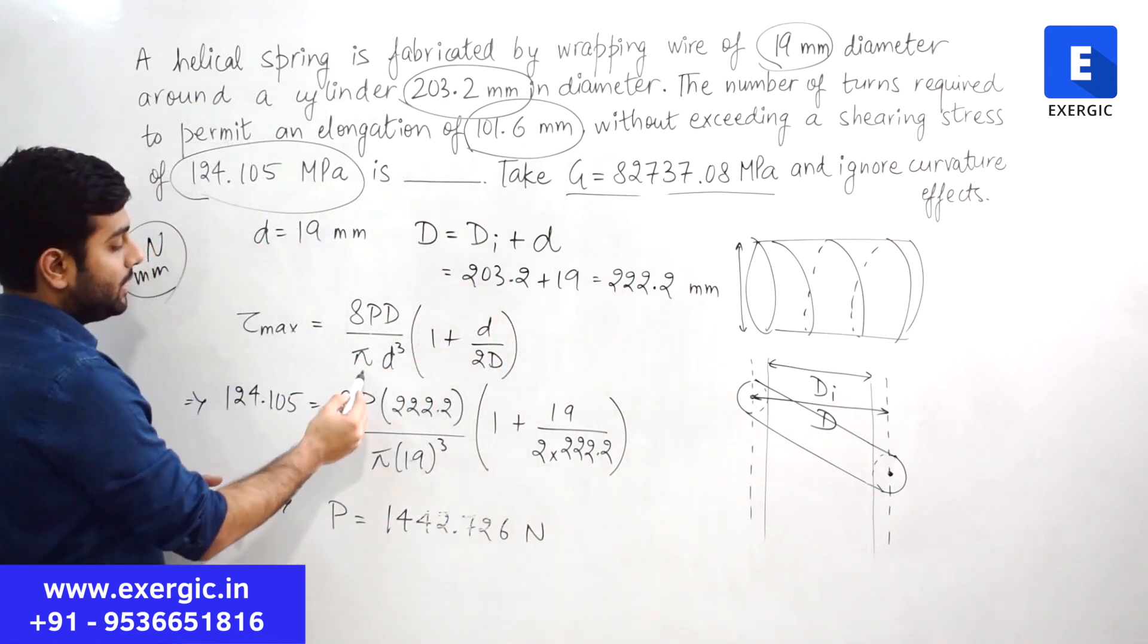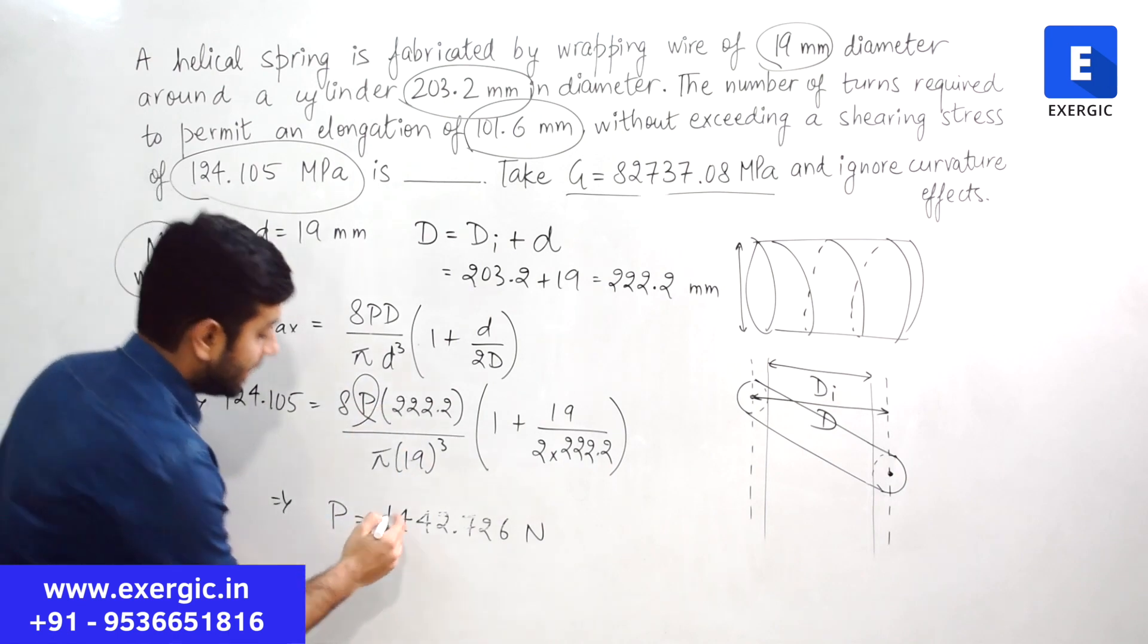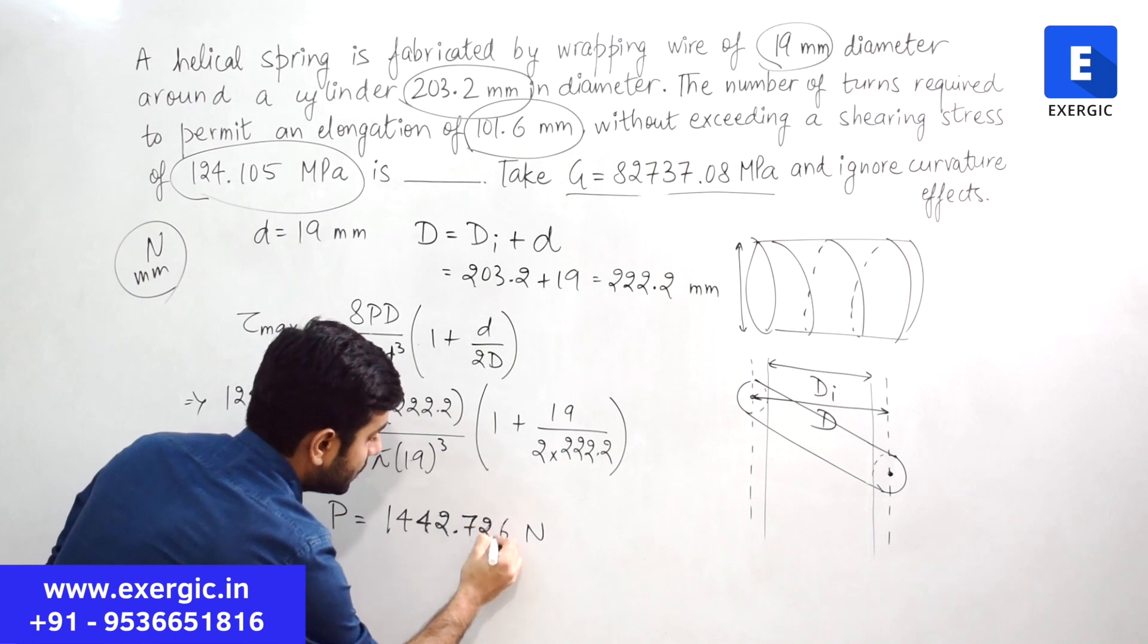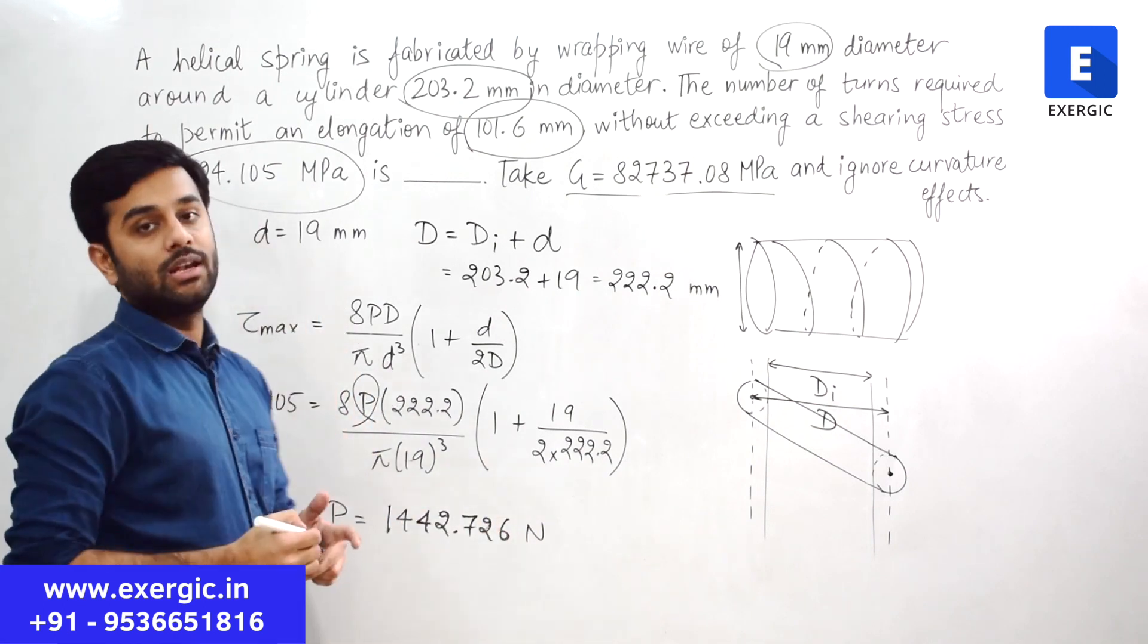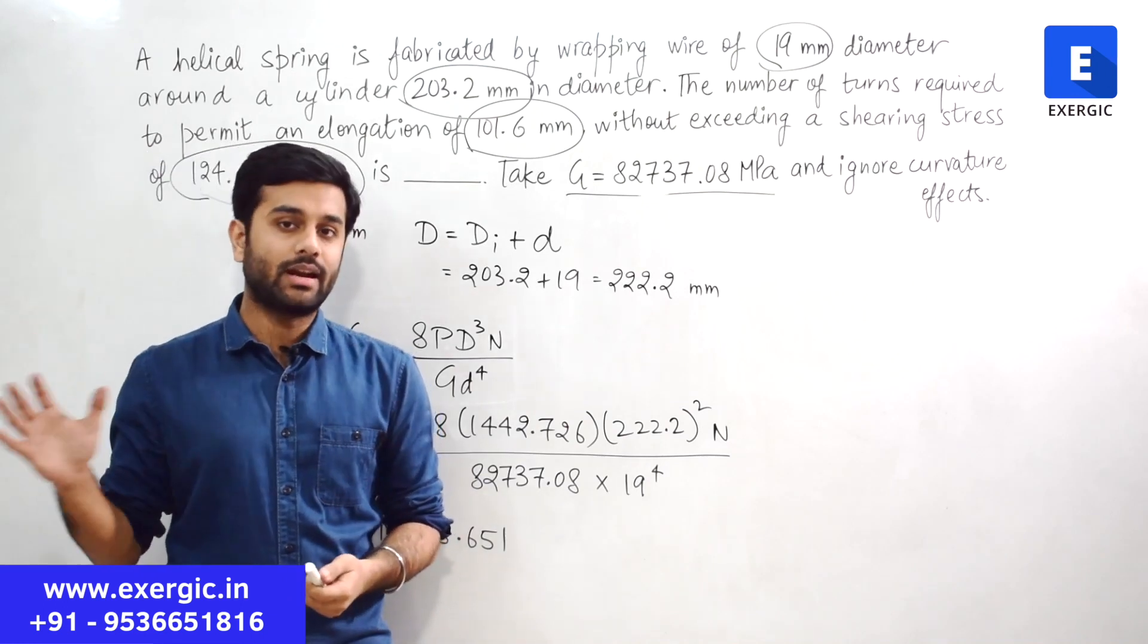So in this expression only P is unknown. Solve them, you will get the value of P as 1442.726 Newton. So this much is the value of P. So we have done the strength design from the strength criteria. Now comes the deflection criteria and this is the interesting discussion.